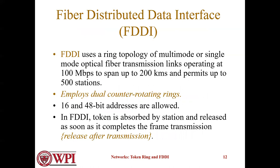FDDI, Fiber Distributed Data Interface, uses a ring topology with multi-mode or single-mode optical transmission links, operating at 100 Mbps, spanning up to 200 kilometers, and permitting up to 500 stations. It employs dual counter-rotating rings, and 16-bit and 48-bit addresses are allowed. In FDDI, the token is seized by a station and released as soon as it completes the frame transmission.